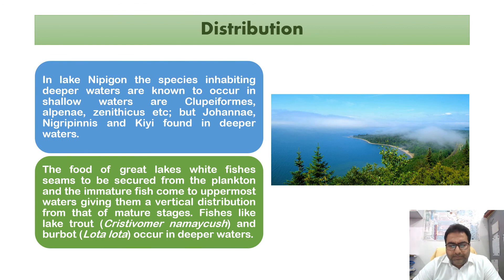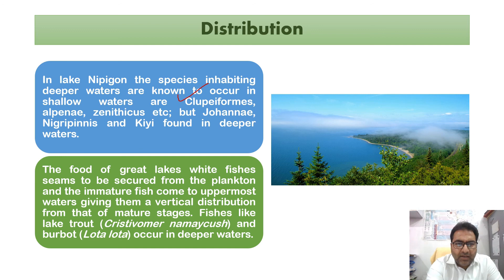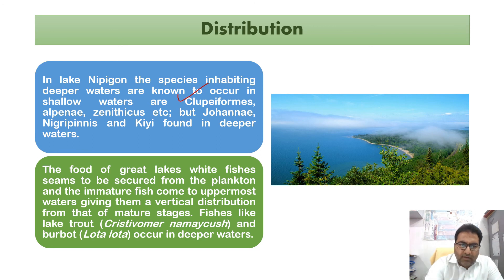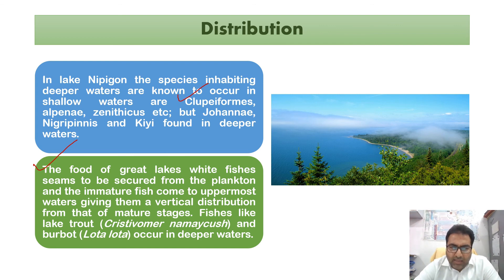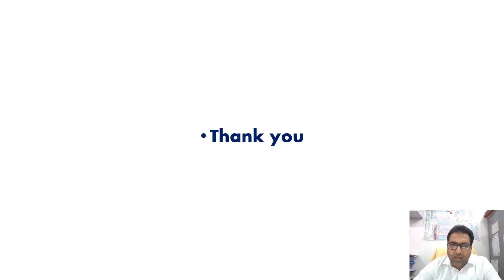In Lake Nipigon, species inhabiting deeper waters are known to also occur in shallow waters, categorized as Coregonus alpinae and C. zenithicus, while johane nigripinis and similar species are found in deeper waters. The food of the Great Lake whitefish seems to be secured from plankton, and immature fish come to the uppermost waters, giving them a different vertical distribution from that of the mature stages. Fishes such as trout (Cristivomer) and burbot (Lota lota) occur in deeper waters.